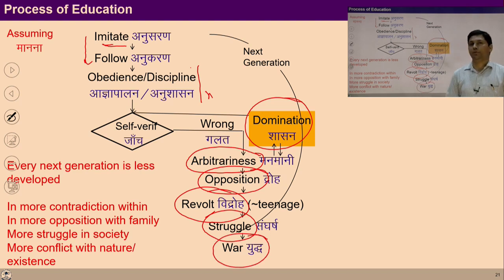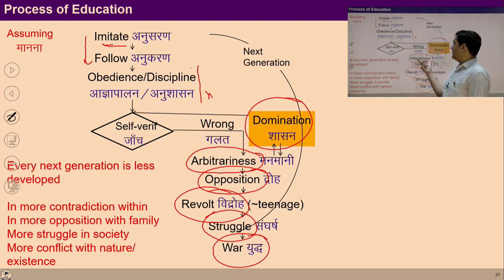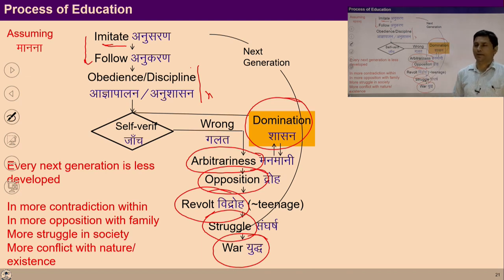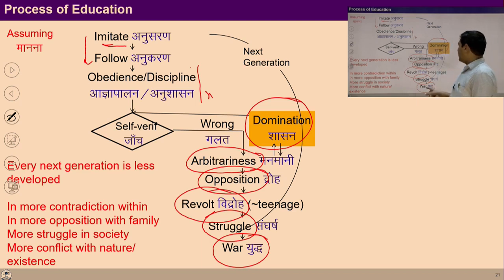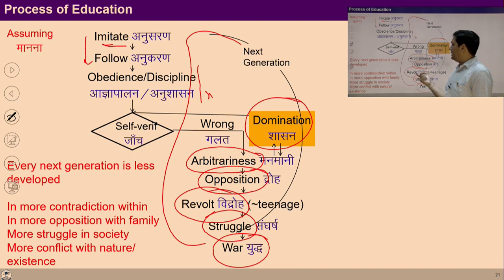This revolt becomes struggle at one stage of life, and similarly it ends up as war. These are the various stages. While a child is going to school, he starts imitating and following. At the family level, he goes through obedience, discipline, and arbitrariness. At the college level, he feels more opposition due to politics and inability to live in relationships. He becomes involved in revolt and war-like situations between parent and child, between friends. What is more important is that this happens generation by generation. If a child who has grown up with this pattern becomes a parent, his child will follow the same route, leading to degradation in civilization.